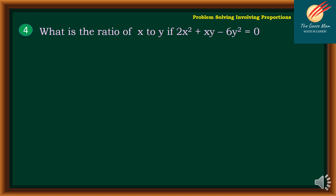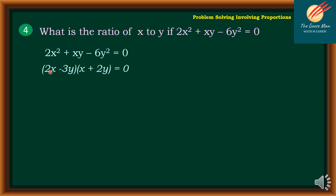Let's move on to the next problem: what is the ratio of x to y if 2x² plus xy minus 6y² equals 0? Notice that we have a quadratic trinomial. Let's recall how to factor it. I look for the factors of 2x: that is 2x times x. The factors of 6 are 3 and 2. Since the middle term is positive — 2 times 2 equals 4, and 3 times 1 equals 3 — that results in xy. Therefore, the factors are (2x minus 3y)(x plus 2y) equals 0.